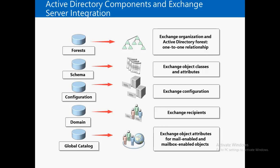Global Catalog Servers (GCS) basically hold partial information about the objects of the entire Active Directory forest. So when Exchange needs information about any object, it will use Global Catalog Servers. Exchange generally uses Global Catalog Servers for obtaining the Global Address List (GAL). When one Exchange user wants to access another user who might belong to another domain in the Active Directory forest, with the help of the GAL that user is able to search for another user inside the address list, and that GAL is provided by the Global Catalog Server to the Exchange Server.